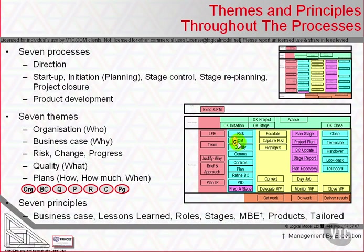We must also consider change. During the initiation stage, we set up a configuration management strategy, which includes the controls required for change control and the delegation of the change authority from the project board, if appropriate, and the setting up of a change budget. Any time we capture a risk or an issue, we're looking at the effect that it would have — the change that it would impose on the project if it's discretionary, or the effect that it has had if it's mandatory. Sometimes those changes are small enough that they can be handled within the project manager's tolerances, or the project board may change the tolerances and we merely perform corrective actions.